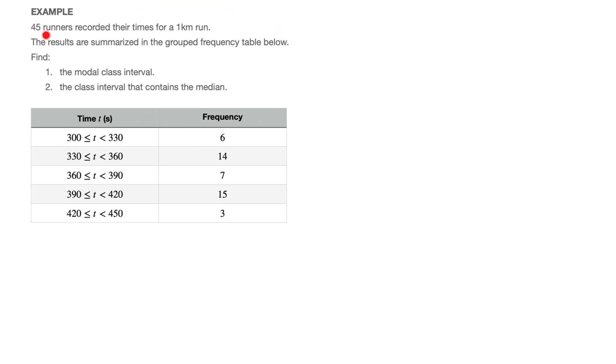We're told 45 runners recorded their times for a 1 km run. The results are summarized in the grouped frequency table below, which is the table we see here. And we're asked to find, firstly, the modal class interval, and secondly, the class interval that contains the median.